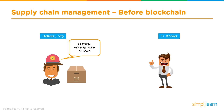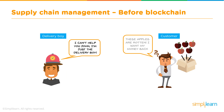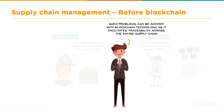Let's look at a scenario before blockchain. There's a delivery boy bringing John his order of apples. John thanks him but sees that his apples are rotten and wants his money back. However, the delivery boy says he can't help since he's just the delivery boy, not the person who created the product. These are the kinds of problems that were faced before blockchain.